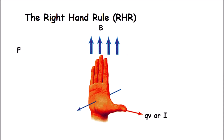The way to remember the thumb: if you were hitchhiking, you'd point your thumb in the direction you want to go. So magnetic field goes in the direction of our fingers, and QV or I points perpendicular to that — the thumb makes a right angle with the fingers. And then third, force comes out of your palm. If we're going to push on something, we use our palm. So there are three parts of the right-hand rule: magnetic field (fingers), QV or I (thumb), and force (palm).